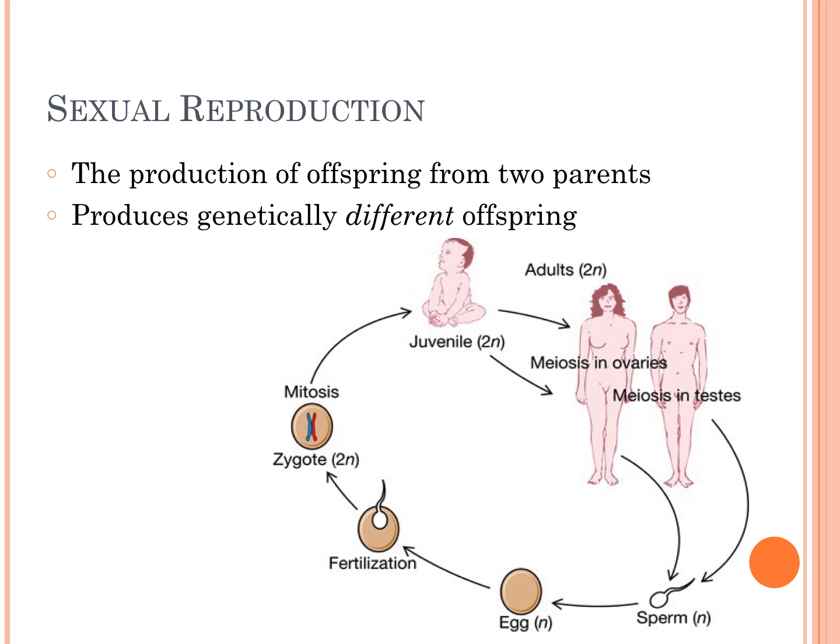Let's talk about sexual reproduction. Remember, mitosis is a form of asexual reproduction. Sexual reproduction is the production of offspring from two parents, and this type of reproduction produces genetically different offspring. Dad produces sperm, mom produces the egg, they come together in fertilization and produce a baby.